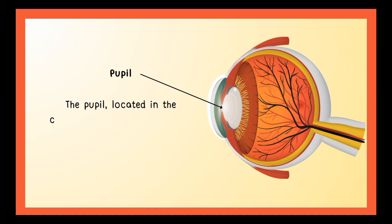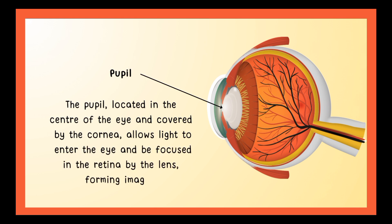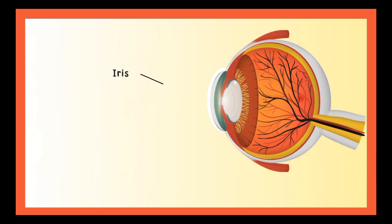The pupil, located in the center of the eye and covered by the cornea, allows light to enter the eye and be focused on the retina by the lens, forming images.